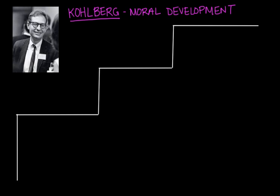What Kohlberg did is he told a bunch of children many dilemma story situations. He told these stories to children of all ages and asked many questions to discover how people reasoned through these moral issues. The most famous dilemma situation was that of Mr. Heinz, a man in Europe. I'm just going to narrate this story quickly because it's a pretty famous situation.